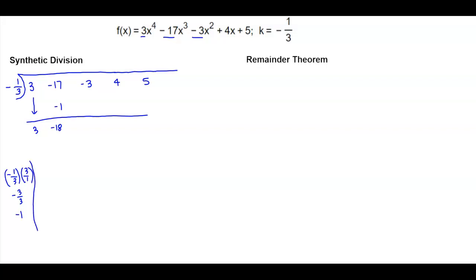We take negative one-third and multiply it by negative 18. A negative times a negative is a positive — 1 times 18 is 18, and 18 divided by 3 is 6. So we get 6 here.